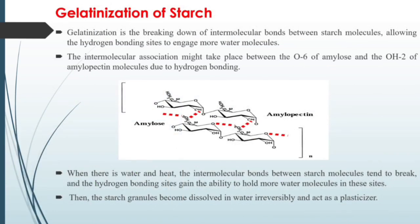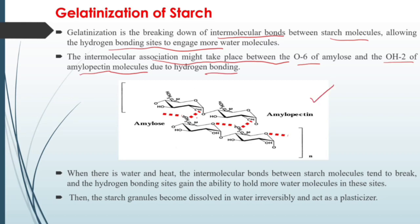Now let's start with the topic of gelatinization. Gelatinization is the breakdown of intermolecular bonds between starch molecules — that is the breakdown of amylose and amylopectin bonding — allowing the hydrogen bond sites to engage more water molecules. The intermolecular association may take place between O6 of amylose and OH2 of amylopectin molecules due to hydrogen bonding. When there is water and heat, the intermolecular bond between starch molecules tends to break, and the hydrogen bonding sites gain the ability to hold more water molecules. The starch granules become dissolved in water in an irreversible process and act as a plasticizer.